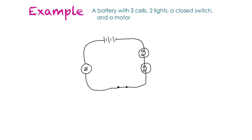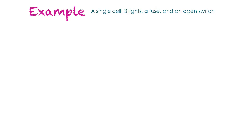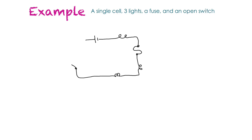In this example we're asked to draw a single cell, three lights, a fuse, and an open switch. I start with our single cell — one long line, one short line — then one light bulb, then the fuse in the middle, then another light bulb, another light bulb, and then the open switch. Closing everything off, we've got our fuse, three light bulbs, an open switch, and a single cell.